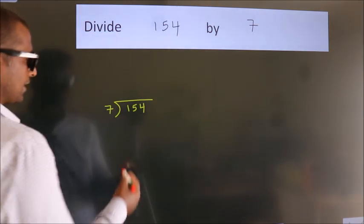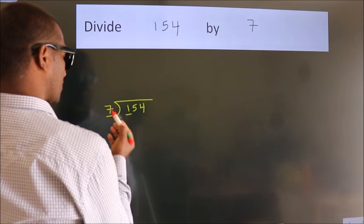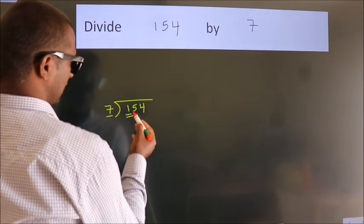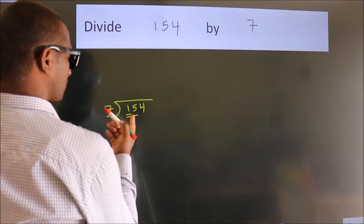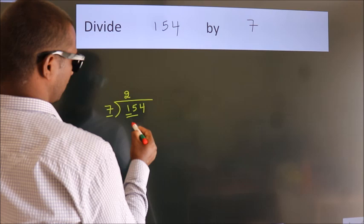Next. Here we have 1, here 7. 1 smaller than 7. So we should take two numbers, 15. A number close to 15 in 7 table is 7 to 14.